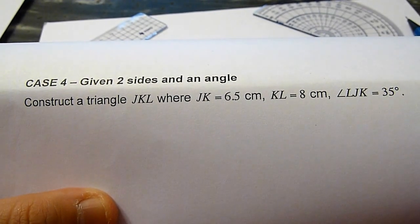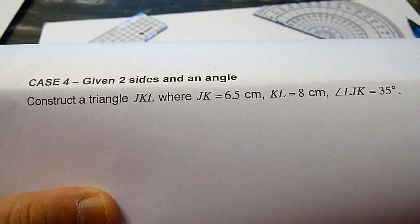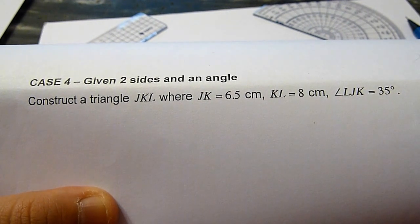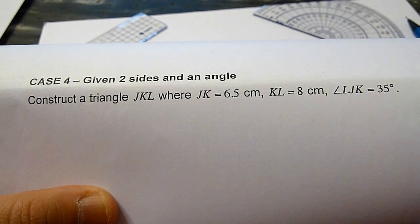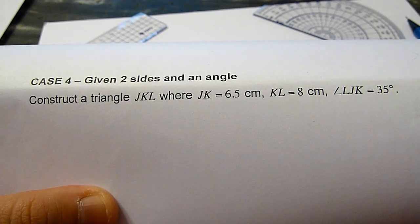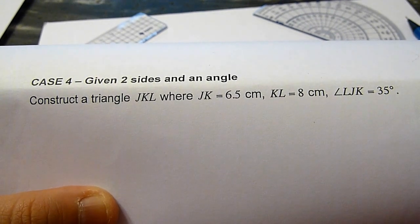To construct a triangle given two sides and an angle, such that JK measures 6.5 cm, KL 8 cm, and angle LJK equal to 35 degrees.